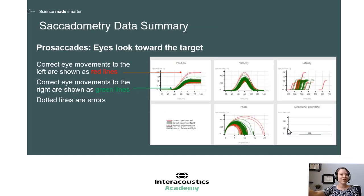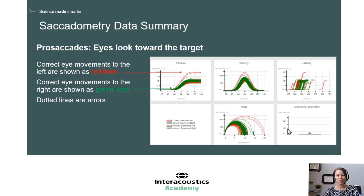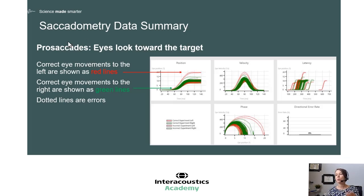To orient you to the colors and lines on the graph: there are two different colors — red lines and green lines. Correct eye movements to the left are shown as red lines, and eye movements to the right are shown as green lines. So the color helps determine the direction of which way the eyes are moving. There are also two different types of lines. If they are a solid line, that means it was a correct eye movement. If it's a dotted line, that means it was an error. This applies to both pro-saccade and anti-saccade displays.